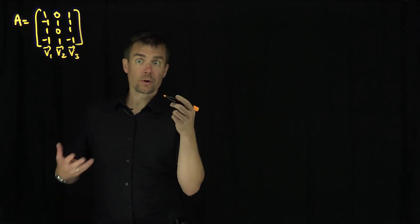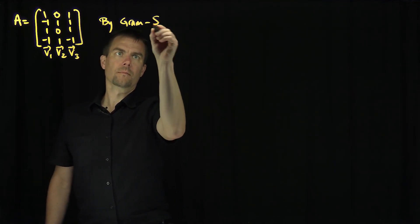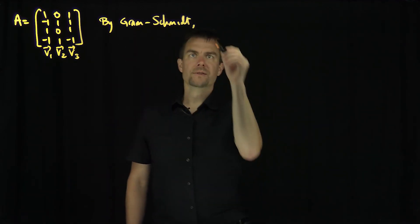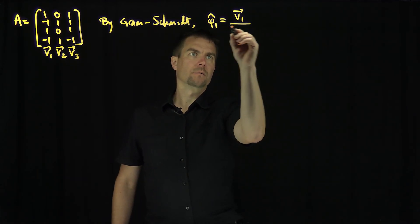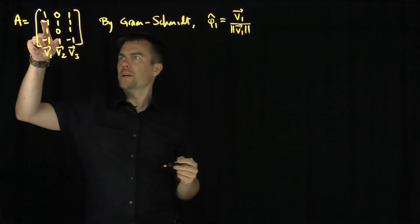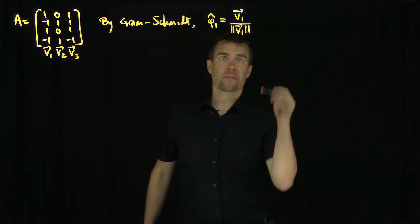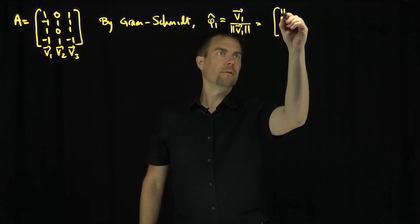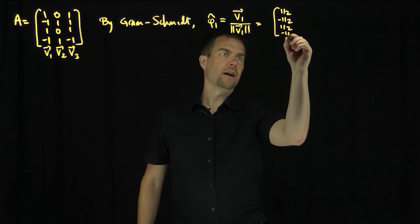What we're going to do is the Gram-Schmidt procedure. By Gram-Schmidt, φ̂₁ is just V1 over the length of V1. The length of V1 is √(1²+1²+1²+1²) = √4 = 2, so we divide by 2. That gives φ̂₁ = [1/2, -1/2, 1/2, -1/2].